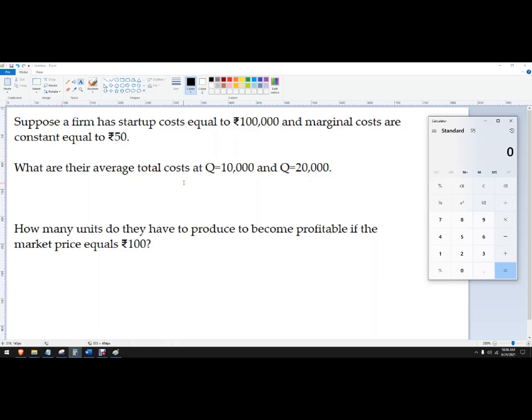What are the average total costs to produce 10,000 units and 20,000 units? And then how many units do we have to produce to become profitable if the market price equals ₹100?